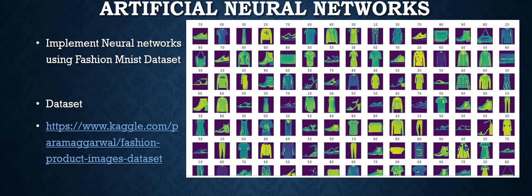Hello, welcome to this session. In this session we are going to talk about creating an artificial neural network using the Fashion MNIST dataset. We are going to use Jupyter Notebook and go from start to end doing a complete course on how to create a neural network using this dataset. We are not going to talk about the theoretical part — for that, please go and watch my previous video where I explained the architecture, backpropagation, forward pass, and weights in detail.